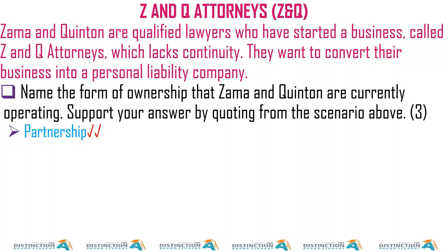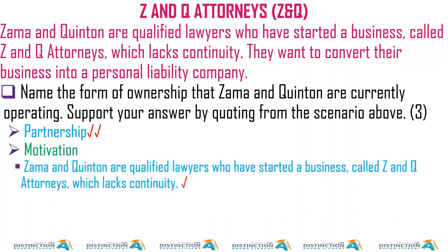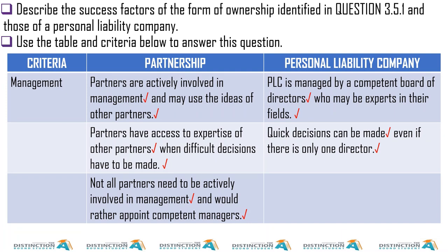Z and Q Attorneys — Zama and Quinton are qualified lawyers who started a business called Z and T Attorneys, which lacks continuity. They want to convert to a personal liability company. Name the form of ownership: partnership. The motivation is that it lacks continuity — that's the biggest thing. These are more than one person and it lacks continuity. If it was a CC or private company, there would be continuity. It's not a sole trader because there are already two people.